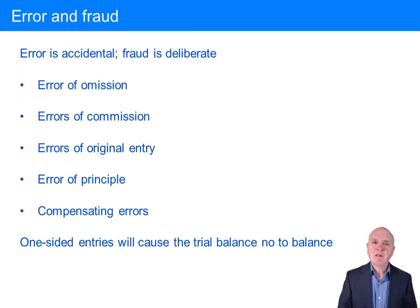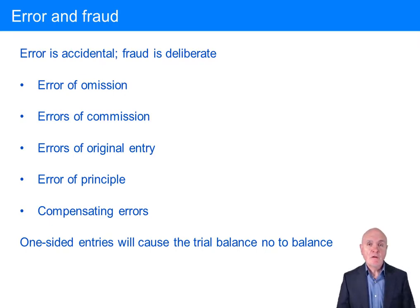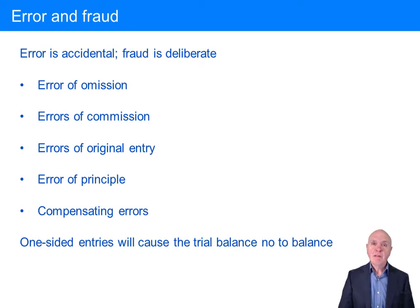This chapter deals with error and fraud, and how these undesirable events could perhaps be prevented, or at least the chance of them happening be considerably reduced.